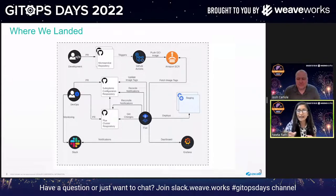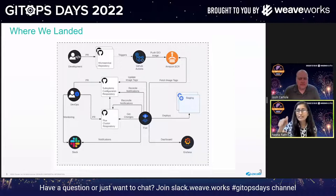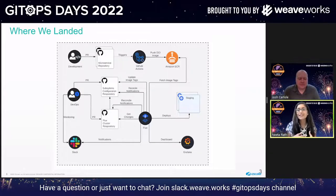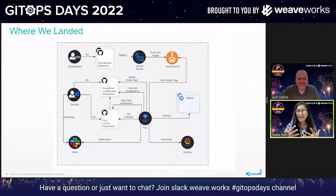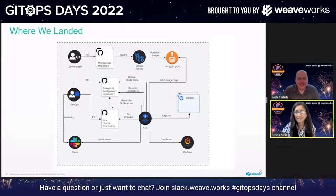We're also using Flux for updating our image tags and configured it for notifications on both Slack and back to our GitHub repository, indicating whether a commit reconciled or errored. Our DevOps team monitors Slack to see what's happening in the cluster. Additionally, we're pulling some dashboards from the Flux2 repository along with some homegrown dashboards — that's how we monitor our cluster state.